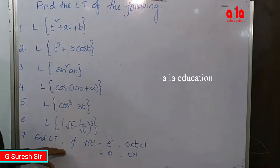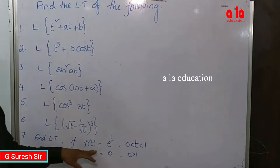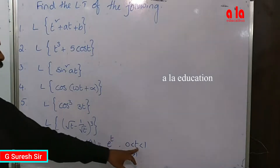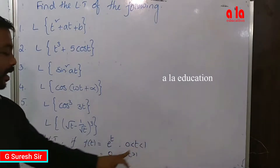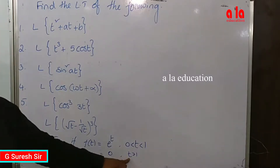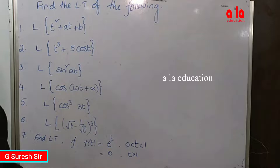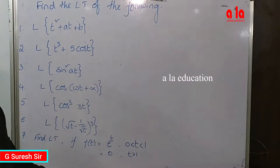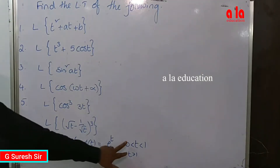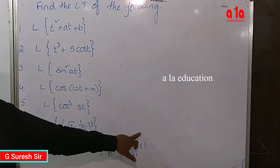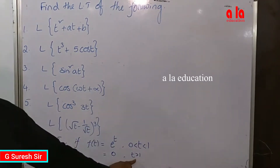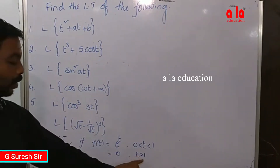Last one: find the Laplace transform if f(t) equals e to the power t when t is between 0 and 1, and equals zero if t is greater than 1. For this, use the definition formula: Laplace transform of f(t) equals integral from 0 to infinity of e to the power minus st times f(t) dt. Split the integral into two parts: 0 to 1 and 1 to infinity.